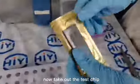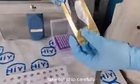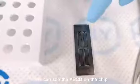Now take out the test chip. Take out the chip carefully. We can see the A, B, C, D positions on the chip.